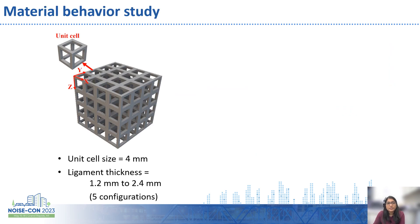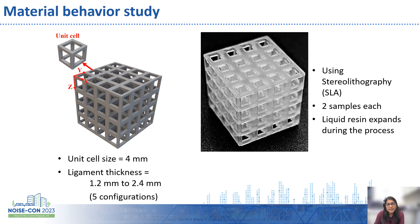For the expansion study of the thermoset resin, we designed a simple strut-based simple cubic unit cell with sharp corners using nTopology software. This unit cell is distributed along three directions so that we have at least four unit cells in each direction. The unit cell length was kept constant at 4 mm and the ligament thickness was varied between 1.2 and 2.4 mm with a step size of 0.3 mm, for a total of five configurations. On the right, you can see a 3D printed cubic sample used for optical analysis.